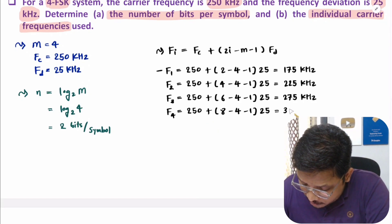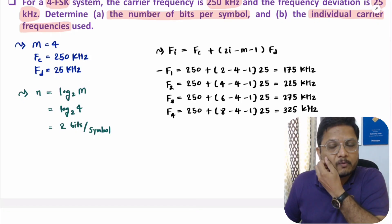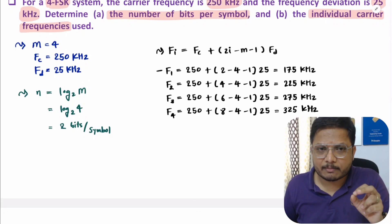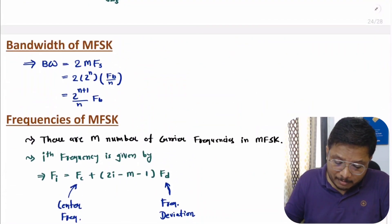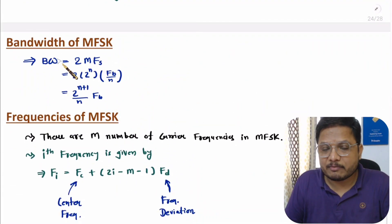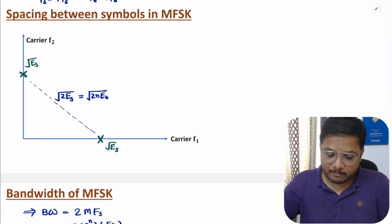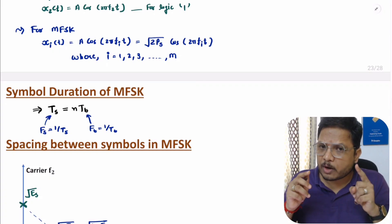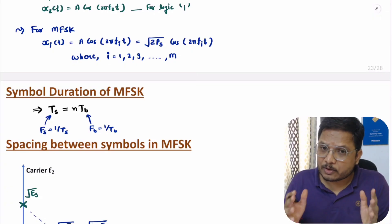So that is how one can calculate individual frequencies for each symbol, bits per symbol, bandwidth, Euclidean distance between symbols, and symbol and bit duration in M-array FSK. I hope you enjoyed this video. If you have any confusion, place it in the comment section — I will be happy to help. Thank you so much for watching.